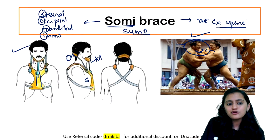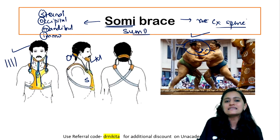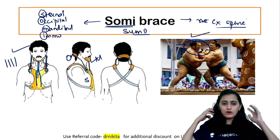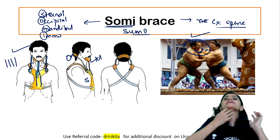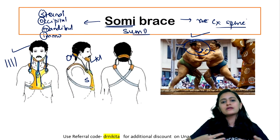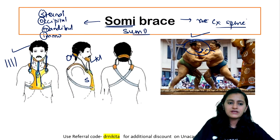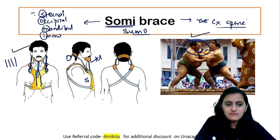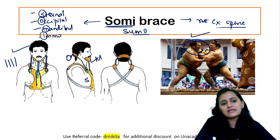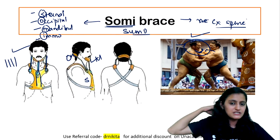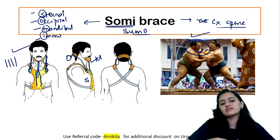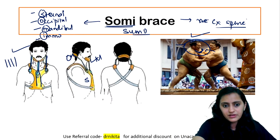Remember that unlike your four post collar which has four lines, somi has three. Out of that you have occipital, one is mandibular, and then they go to the sternum. So: Sternal, Occipital, Mandibular Immobilization. That is your somi brace.